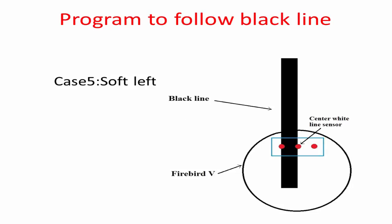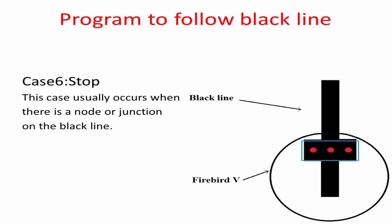Case 5: when the black line is below the first and second line sensors, the robot should be made to turn soft left. Case 6: when the black line is below all three line sensors, this case usually occurs when there is a node in the line. In this case, the robot should be made to stop to make a decision about what to do next.